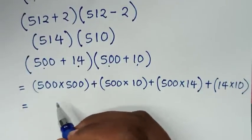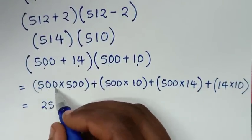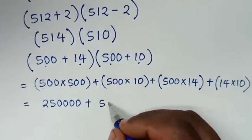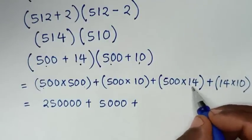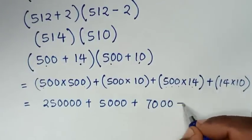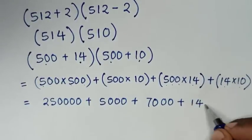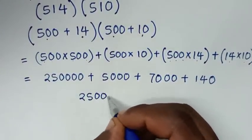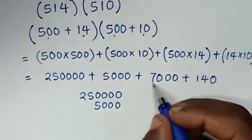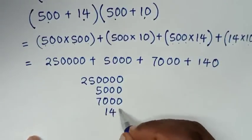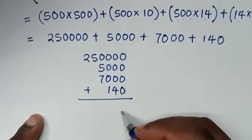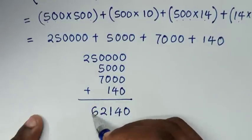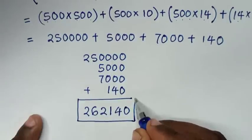Then computing each term: 500 times 500 is 250,000; plus 500 times 10 is 5,000; plus 500 times 14 is 7,000; plus 14 times 10 is 140. Finding the sum: 250,000 plus 5,000 plus 7,000 plus 140 equals 262,140. So this is the final answer to our problem.